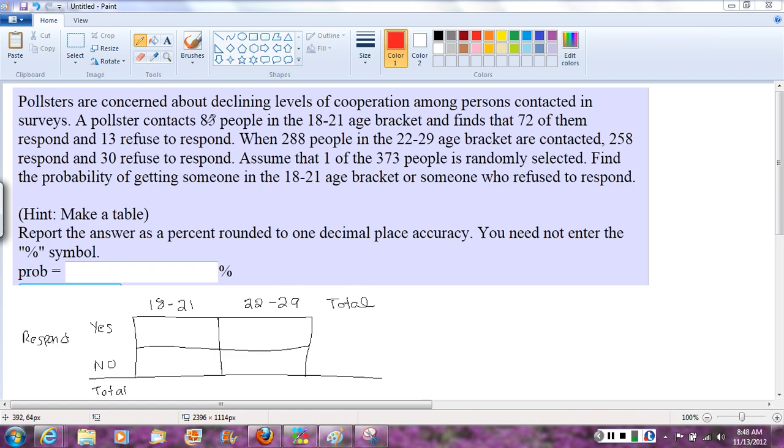So let's go first and see the first piece of information. They contacted 85 people in the 18 to 21 age bracket. So that's the total number of people in 18 to 21. There were 85.